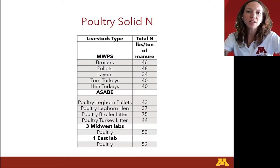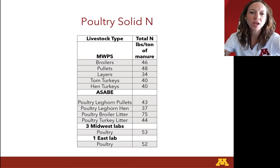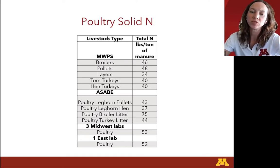For poultry solid nitrogen, Midwest Plant Service had a range between 34 and 48 for all the different varieties of poultry. ASABE had between 37 and 75. Our three Midwestern labs had a median of 53 and the Eastern lab had 52 — all higher than Midwest Plant Service, with the only exception being the broiler litter category. So that was the only notable difference in this category.